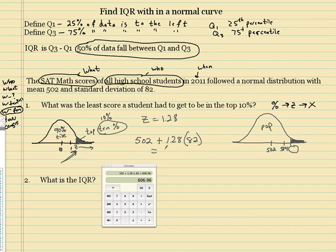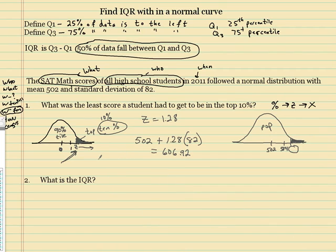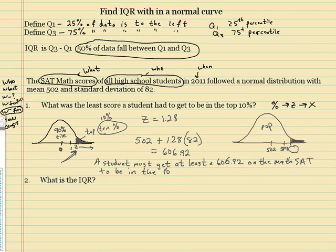So a student has to get at least a 606.92. A student must get at least 606.92 on the math SAT to be in the top 10%. See this number's right over here? 606.92. If he gets anything better than that, he's going to fall under this whole range.